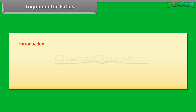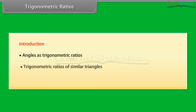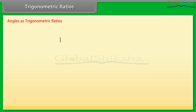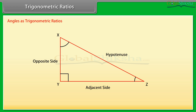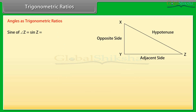Trigonometric ratios: let us begin our introduction to trigonometry with trigonometric ratios. We will express the angles as trigonometric ratios, compare trigonometric ratios of similar triangles, and solve examples. Look at triangle XYZ, right angled at Y. Angles X and Z are both acute. XY is the side opposite to angle Z, YZ is the side adjacent to angle Z, and XZ is the hypotenuse.